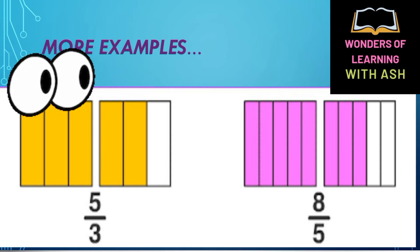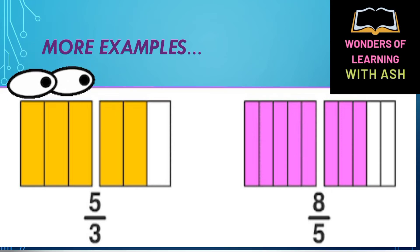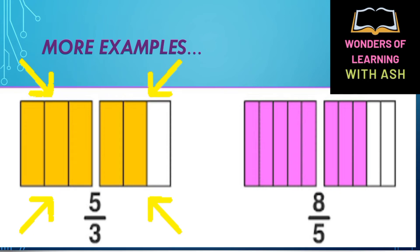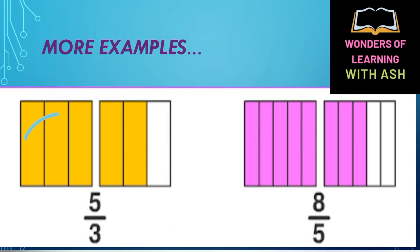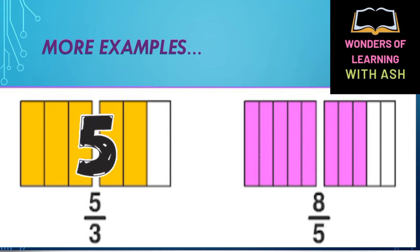Look at the squares. Here are two squares. The first square is divided into 3 parts — all three parts are shaded, so that is 3 by 3. The second square is also divided into 3 parts, and 2 parts are shaded. So total, how many parts are shaded?